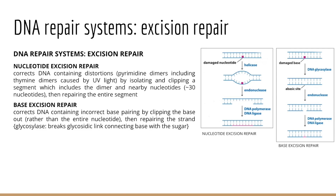In base excision repair, we're looking at the removal of just bases — not entire nucleotides — generally bases that have been damaged or have some chemical modification. We rely on DNA glycosylase, which breaks the glycosidic link between a base and the sugar backbone, removing just the damaged base while leaving the rest of the nucleotide in place. Then an endonuclease nicks the sugar phosphate backbone, we remove the rest of the nucleotide, DNA polymerase fills in a new nucleotide, and DNA ligase seals the gap. Make sure you recognize the small nuances between nucleotide excision repair and base excision repair.